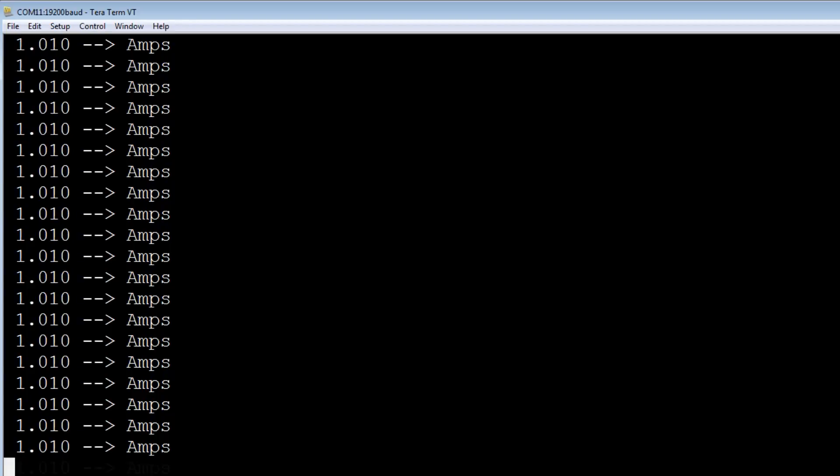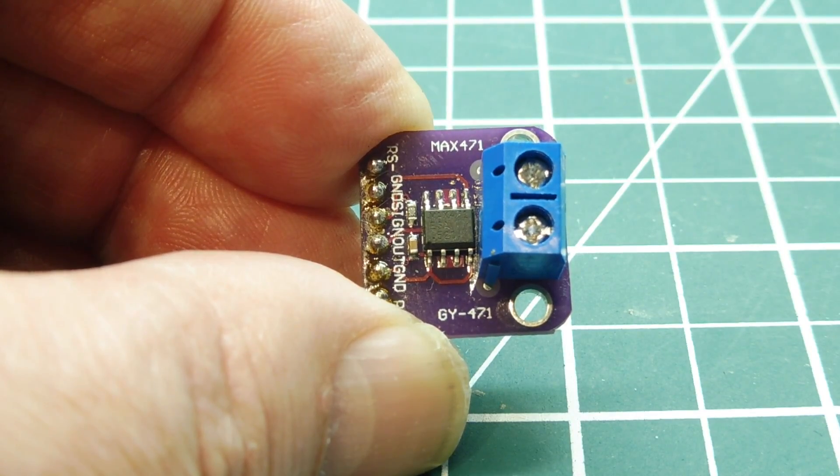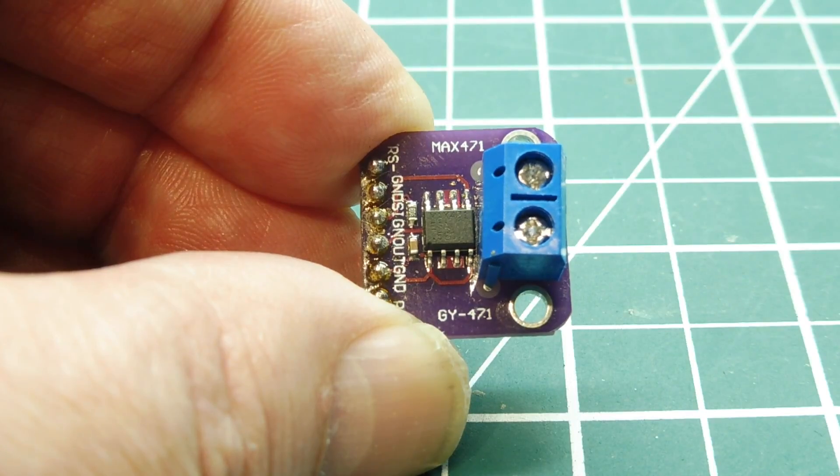Using the MAX471 chip, it's very easy to create a current monitor because the voltage output equals the current output. Now you know how the MAX471 IC works - it's pretty versatile.